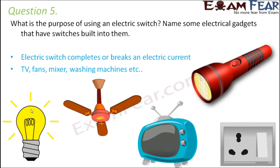Question number five — What is the purpose of using an electric switch? Name some electrical gadgets that have switches built into them. Switches are primarily used to complete or break a circuit. When it completes the circuit, current flows and the bulb or fan turns on; when it breaks the circuit, they stop. Switches are found in washing machines, televisions, mixer grinders, microwaves, and many other electrical appliances.